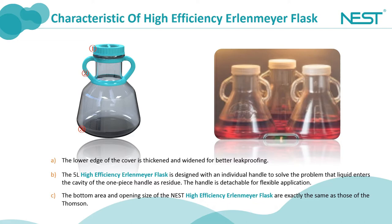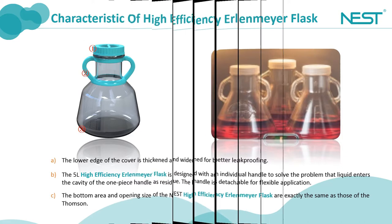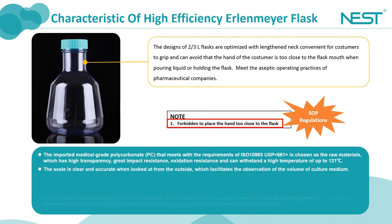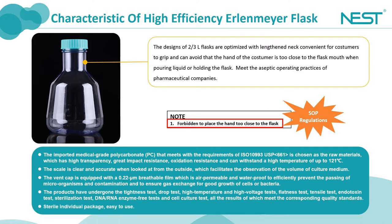Major optimizations of our products are based on client feedback, and we are grateful for all the clients who have helped us improve our products. The 2-liter and 3-liter high efficiency Erlenmeyer flasks have no handle, and users should hold the bottleneck when pouring. Many pharmaceutical companies have stipulated in their SOPs that it's forbidden to place the hand too close to the flask opening to prevent contact with the opening and causing risks. The lengthened bottleneck design of the Nest flask has eliminated this risk.